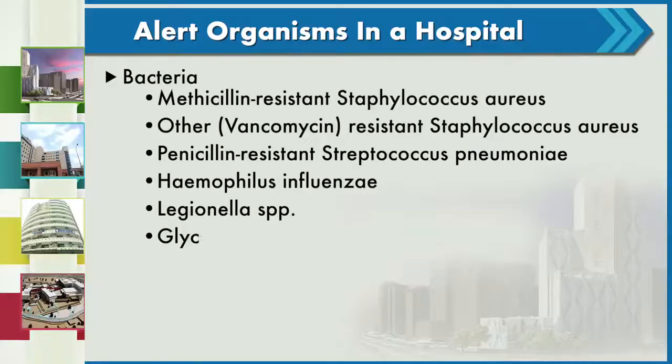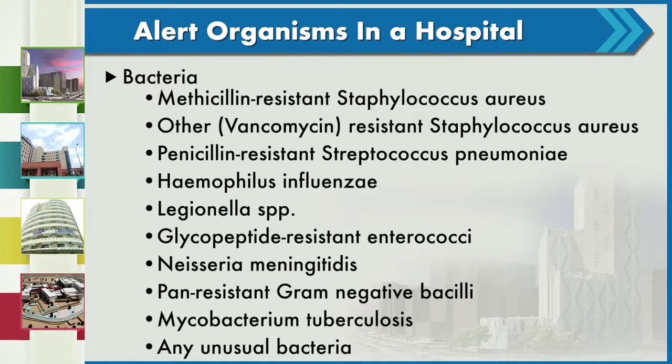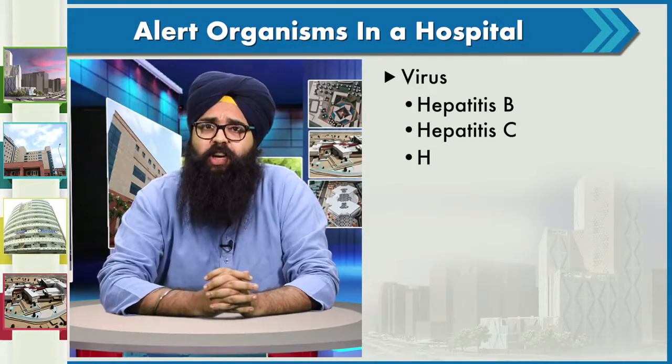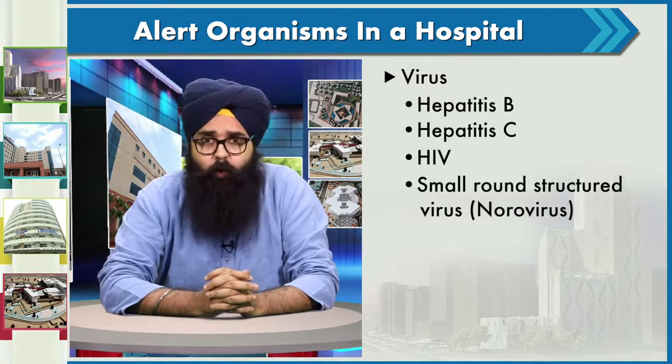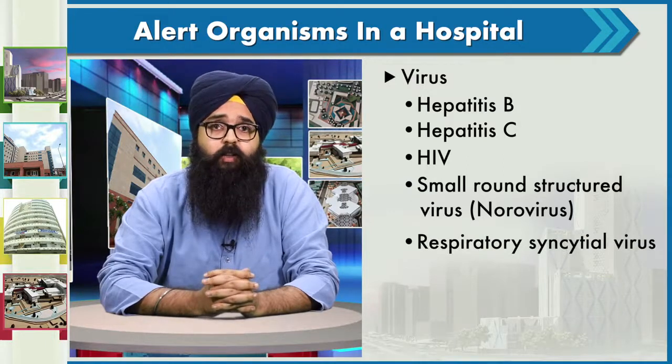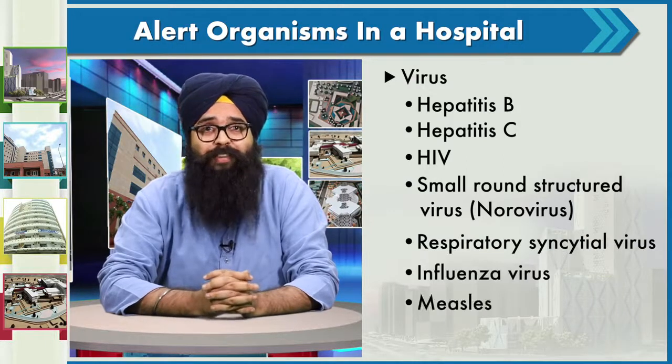Who causes nosocomial infections in the hospital? We have microorganisms in the hospital which are alert organisms we have to guard against. Examples include tuberculosis spread through bacteria, and viruses like Hepatitis B, Hepatitis C, HIV, norovirus, small round structured virus, respiratory syncytial virus, influenza, measles, and dengue.